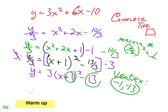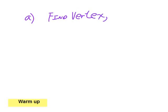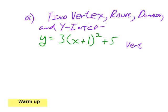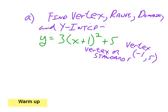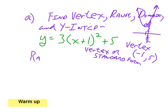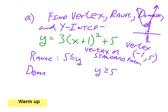Let's find the vertex, the range, the domain, and the y-intercept again. This is the standard form, which makes it so easy. The vertex is at the opposite of that 1, and you take the full 5, so it's at negative 1 comma 5. There's your vertex right about there. It's a happy face because the 3 is a positive number. The y-intercept — when x is 0 — is 0 plus 1 is 1 squared times 3 is 3 plus 5 is 8. So it's going to have an intercept of 0 comma 8.